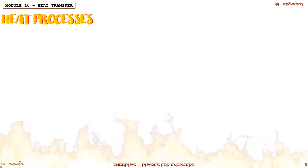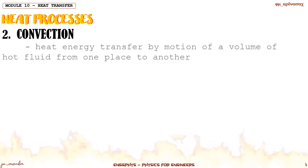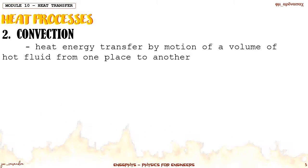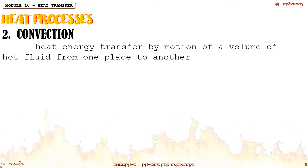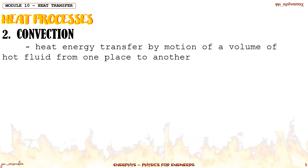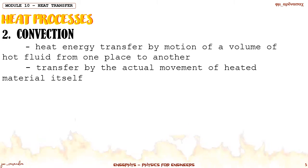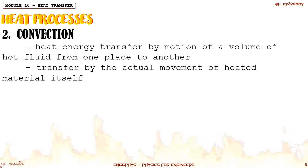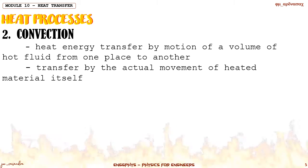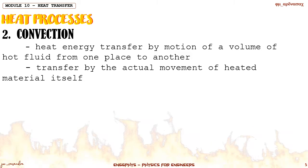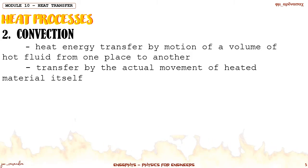The next process under heat transfer is convection. Convection is the heat transfer by motion of a volume of hot fluid from one place to another. Basically, convection is transfer by motion — from hot to cool and then cool to hot. The transfer is by the actual movement of the heated material itself. For example, in a convection stove, heat transfer is not necessarily by direct contact, but by the movement of the heated molecules of the material.